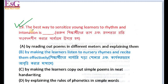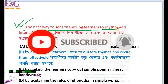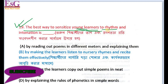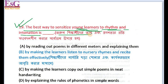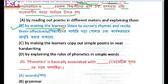The best way to sensitize young learners to intonation — for young learners, to make them aware of tone and intonation, the best way — the right answer is B: by making the learner listen to nursery rhymes and recite them effectively.